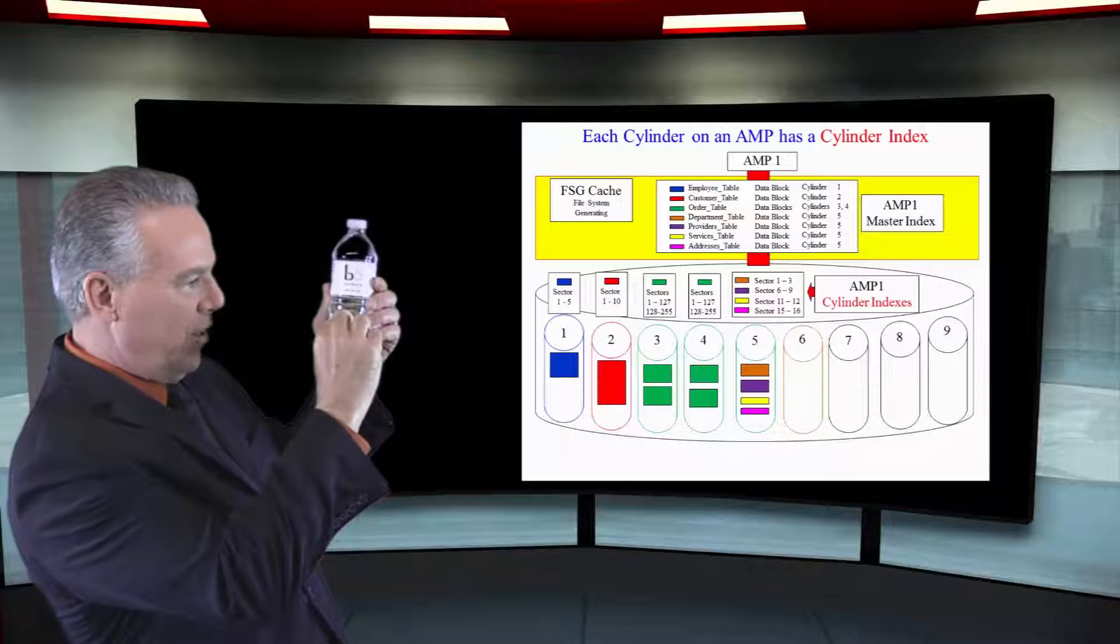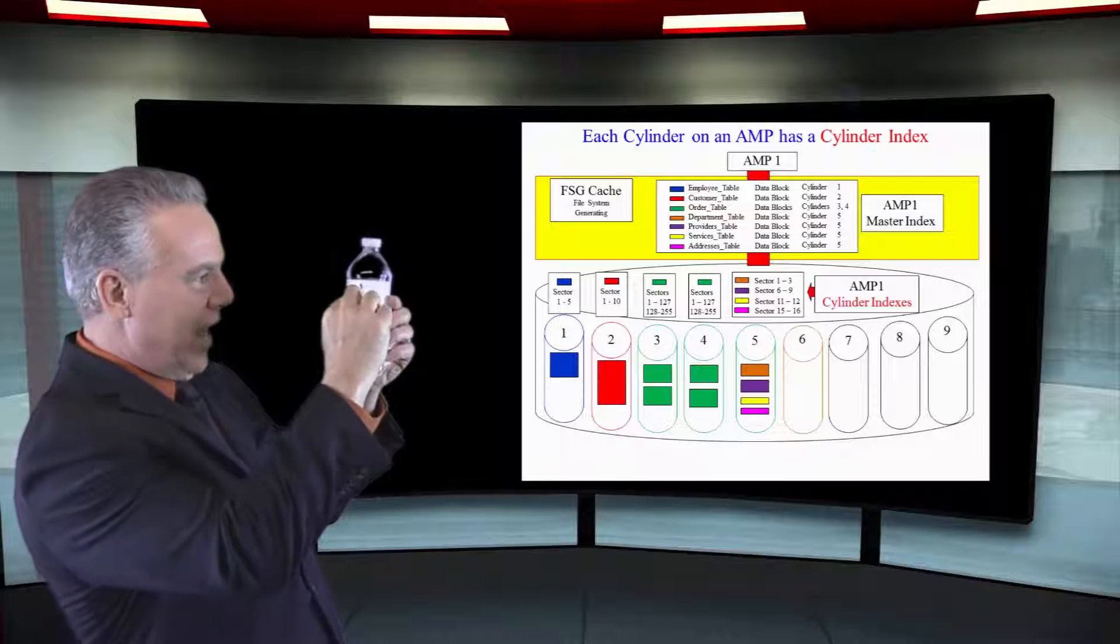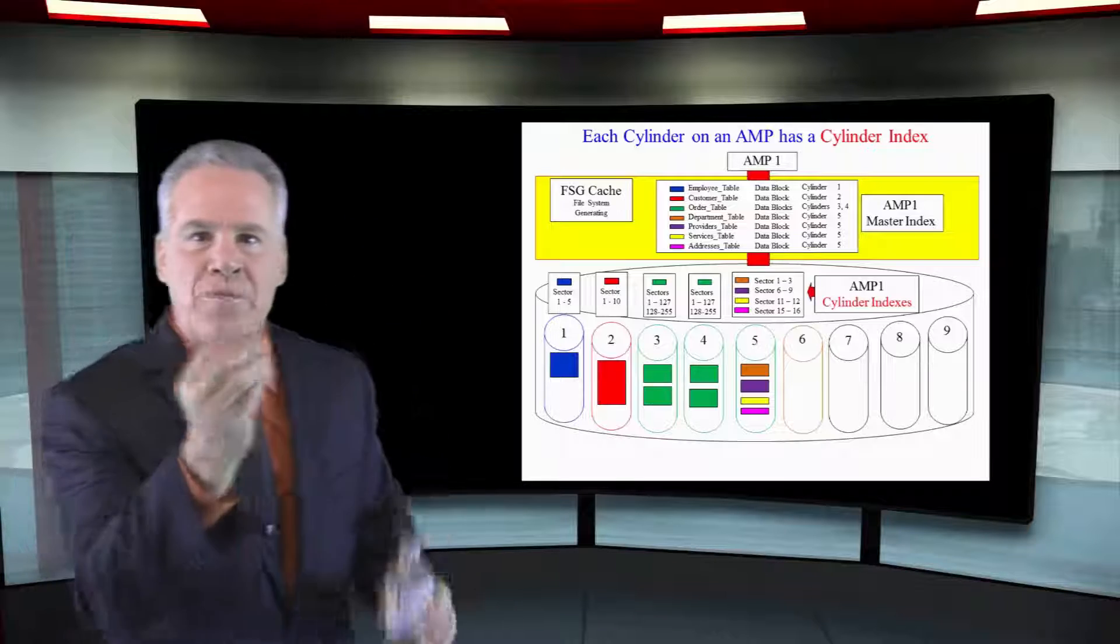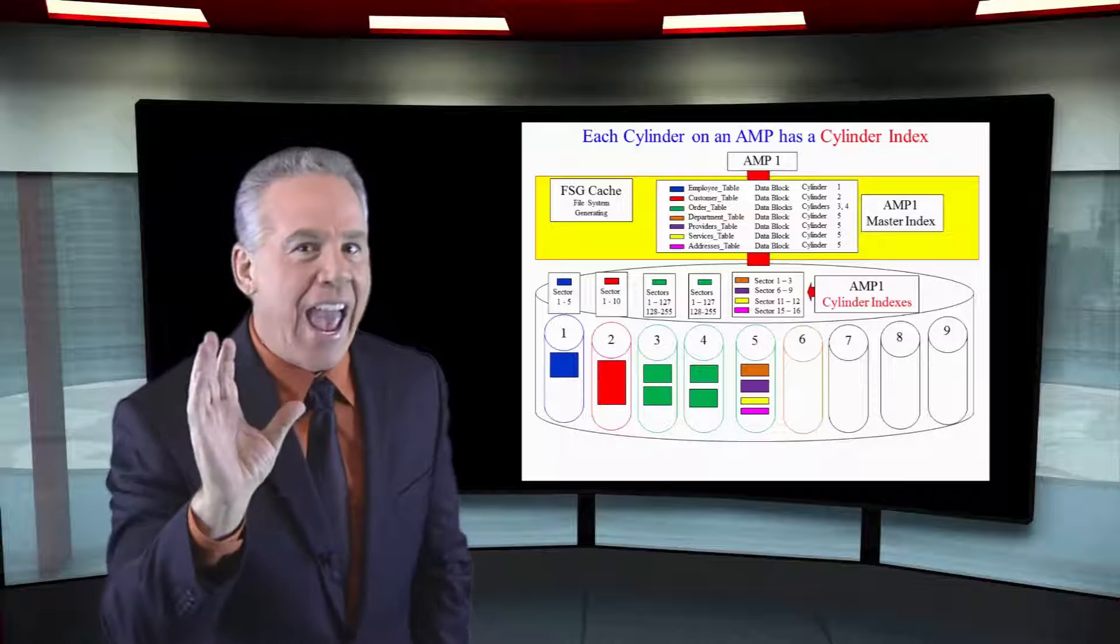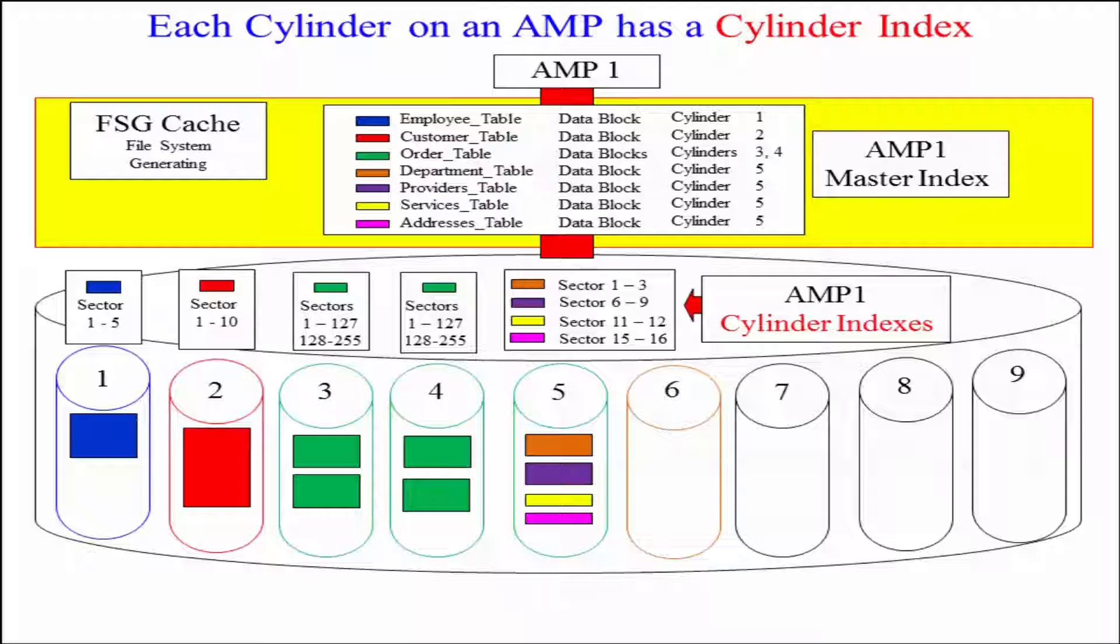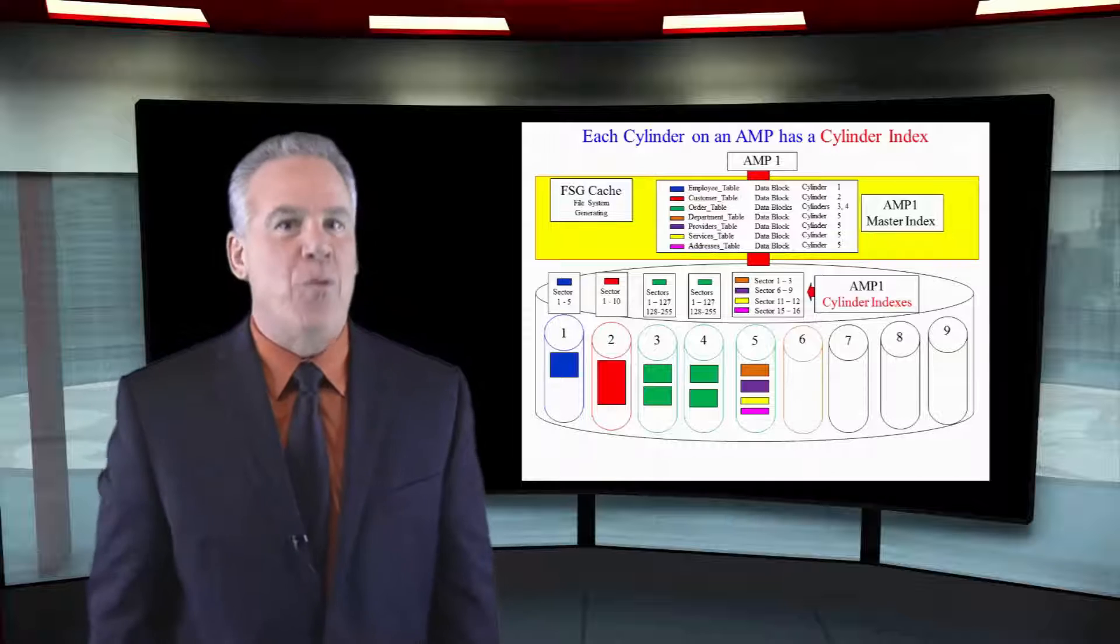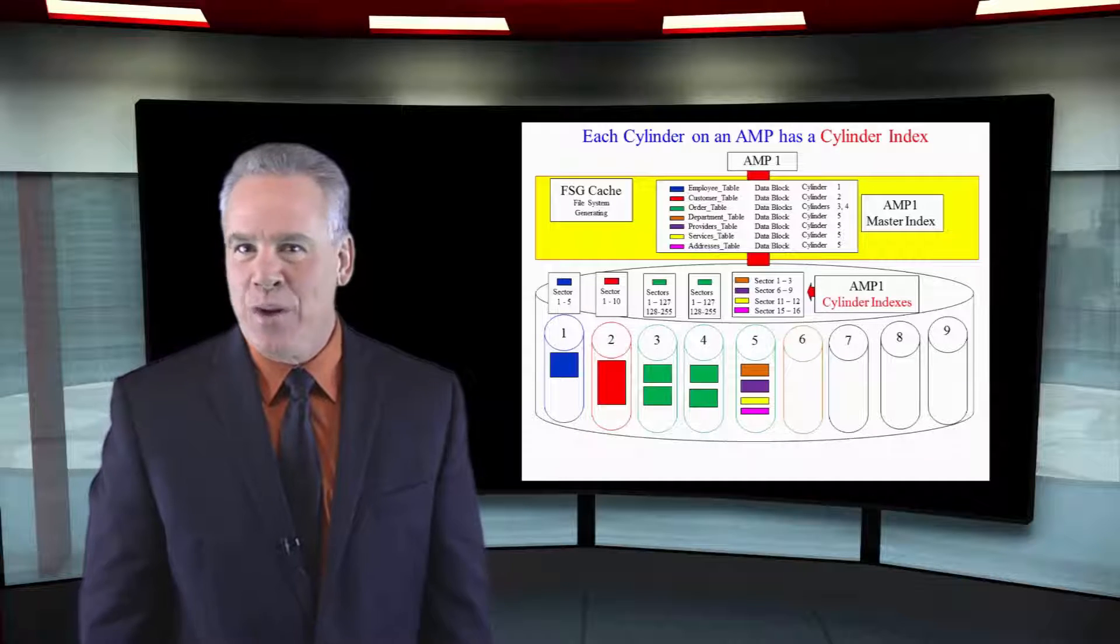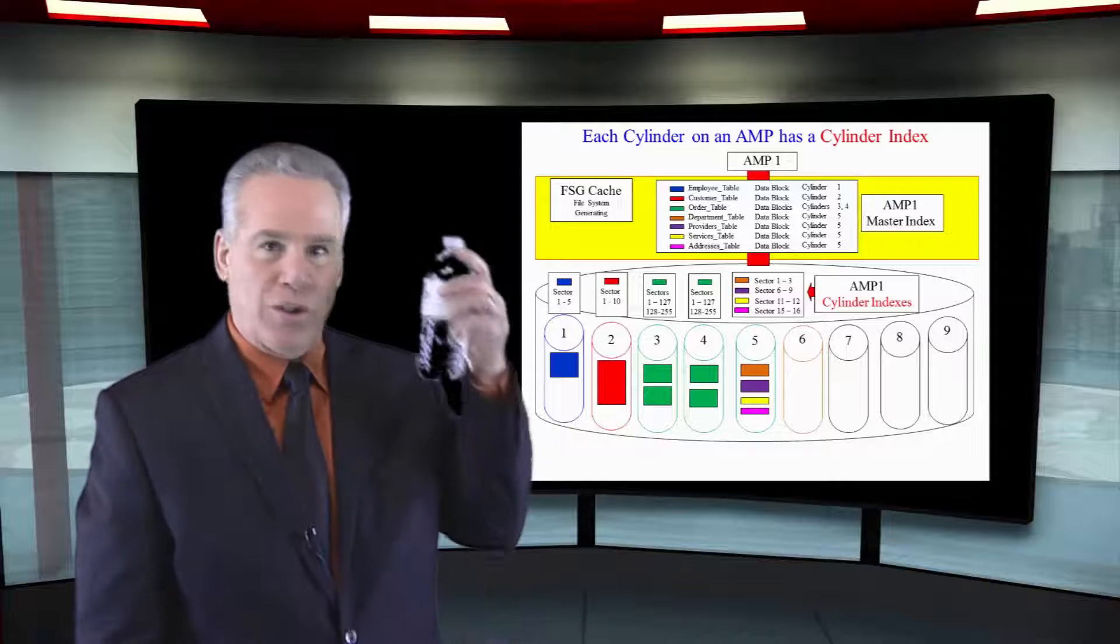There's the first set of data blocks, second, third, and fourth. That cylinder index actually tells the amp which set of sectors to pull into memory that represent that particular table. So you always have one master index and one cylinder index per cylinder.